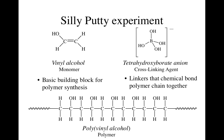Today's experiment involves silly putty. Silly putty is made out of two components: the vinyl alcohol monomer and the tetrahydroxyborate anion, which is a cross-linking agent. The vinyl alcohol monomer is the basic building block for this polymer synthesis. Here's the monomer piece, here is the polymer, and notice how it just repeats over and over as many times as you want.